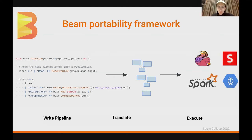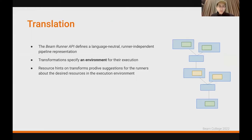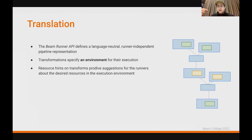Let's take a closer look at the translation part. Part of the Beam portability framework is the Runner API, which defines a language-neutral and runner-independent pipeline representation so that you can write the pipeline in any language and run it on any runner that supports the portable framework. Part of this representation is the fact that transforms in the portable representation have environments assigned to them, and the environment has various different bits of information about